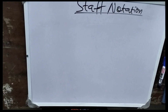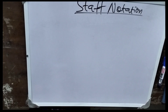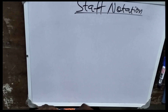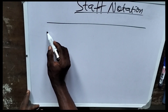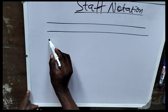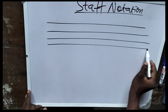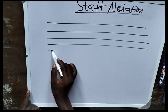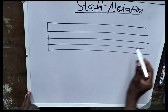First thing we should know is that we have what we call lines and spaces. And if you learn it, you know it. You have the first line, second line, third line, fourth line, and fifth line. So if you see them, how do you know them?